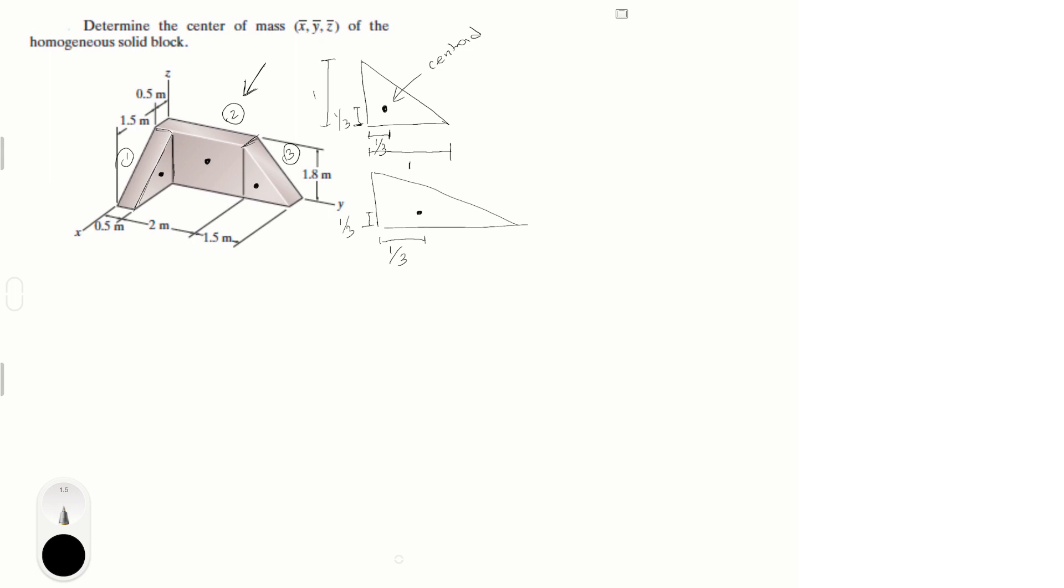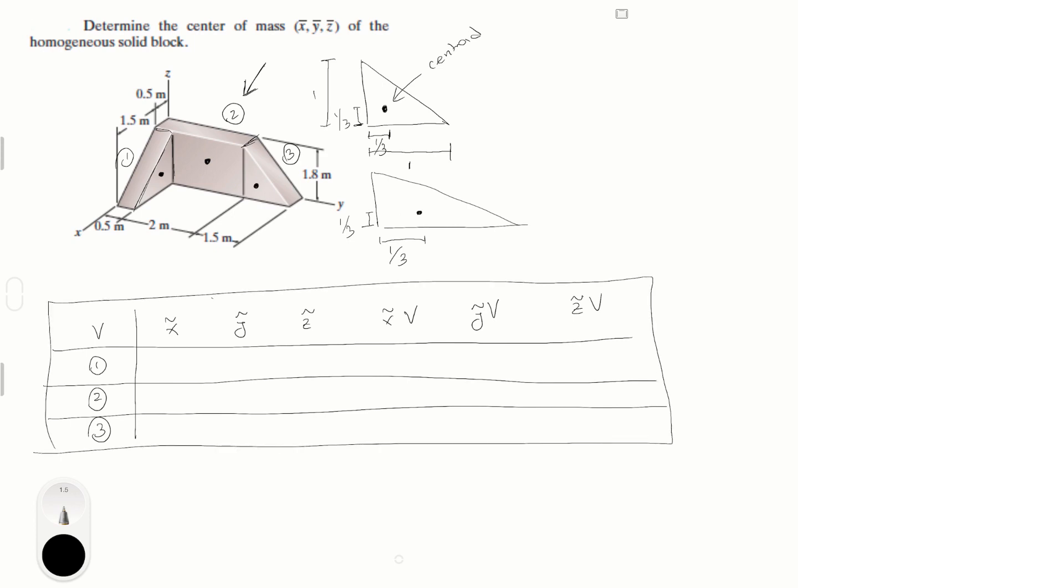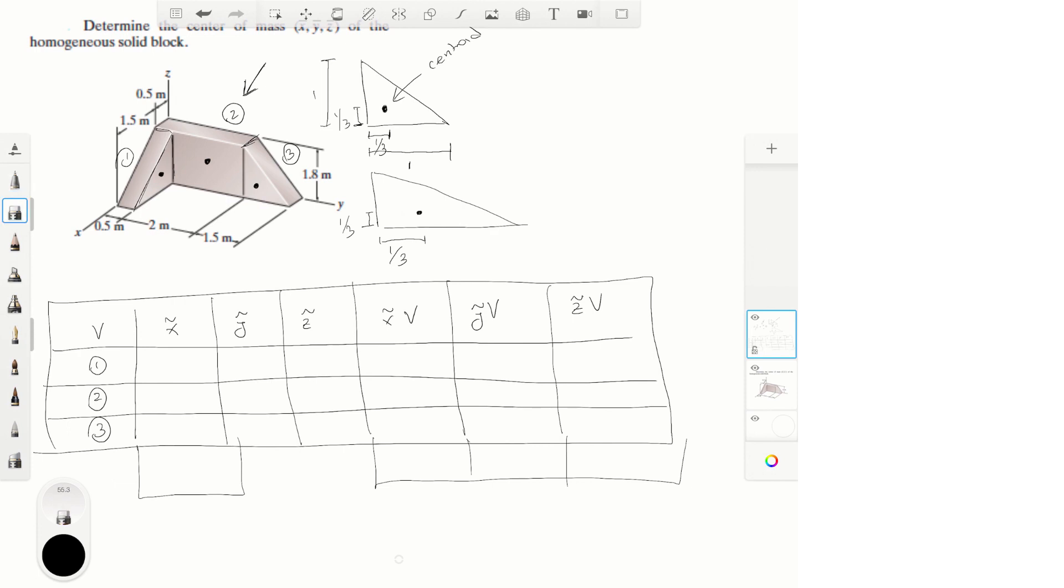Now let's build our table. Our table looks something like this. We got the volume, X, Y and Z location of the centroids. Now the location on X multiplied by the volume, same for Y and same for Z. And then we have part one, part two and part three. And then we're going to need to find these sums. This is not the first video where I do this. Sorry about that. This is one, this is two, and this is three. Okay. Back on track.